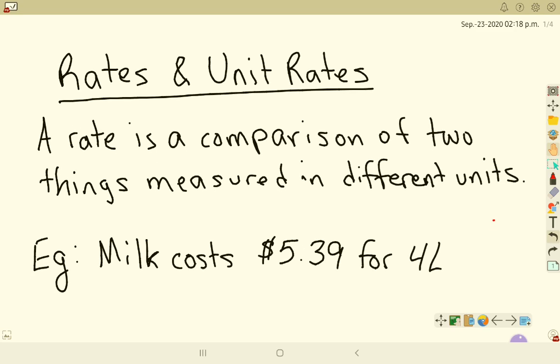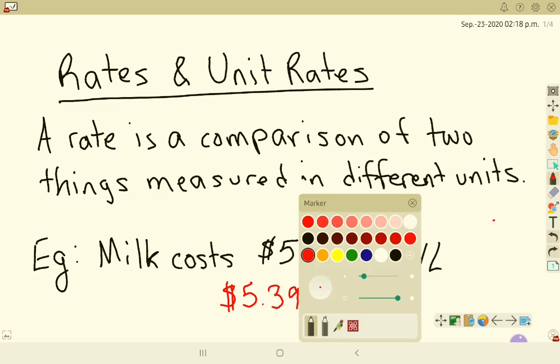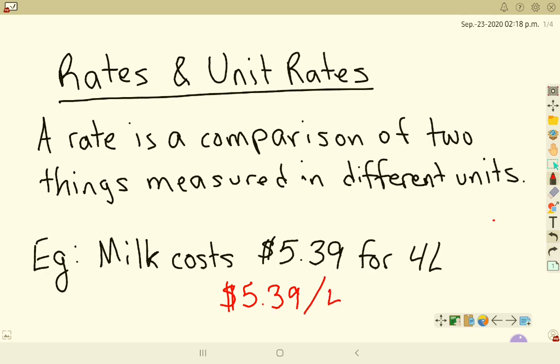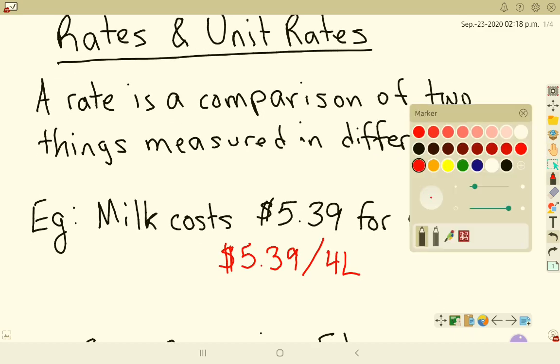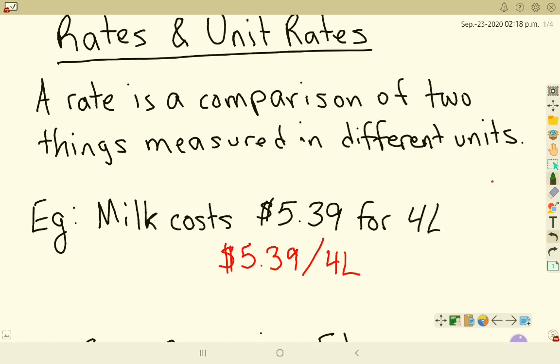So for example, we could see a rate that says milk costs about $5.39 for 4 litres. So to write that as a rate, I would say $5.39 and then I use this little slash and I would write 4 litres and when I say that slash out loud, I read it as the word per. So the way I would say this is it's $5.39 per 4 litres.